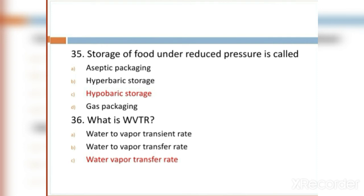MCQ 36: What is WVTR? Option A: Water vapor transient rate. Option B: Water vapor transfer rate. Option C: Water vapor transmission rate. Option C, water vapor transfer rate, is the right answer.